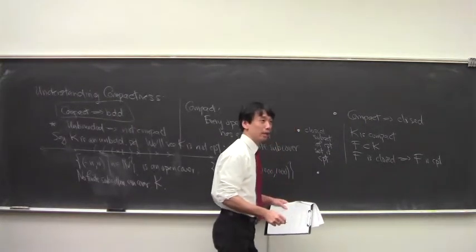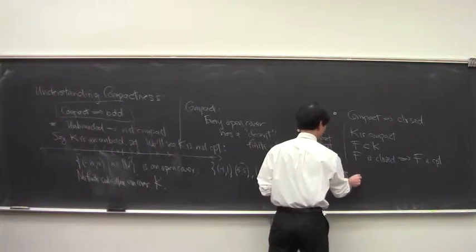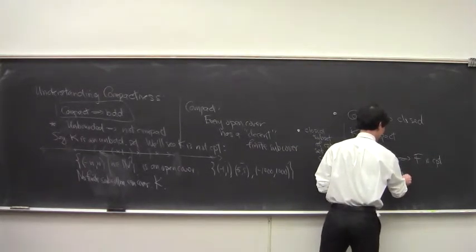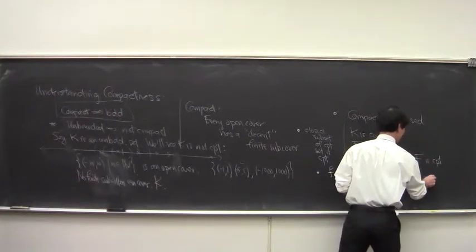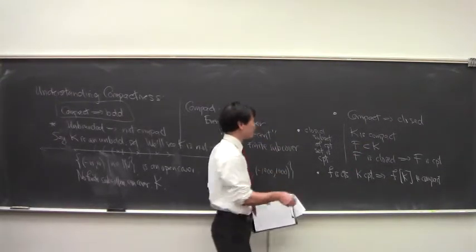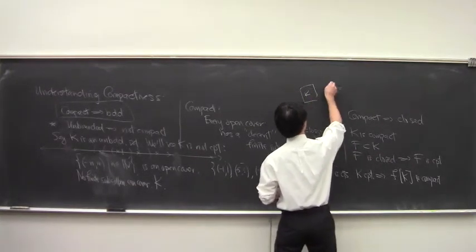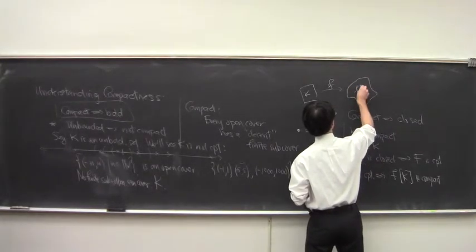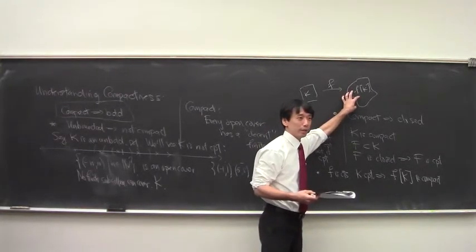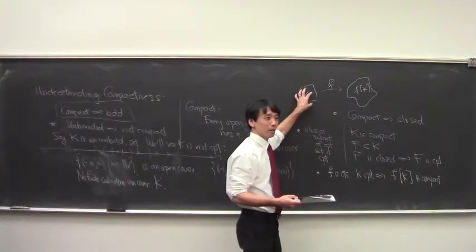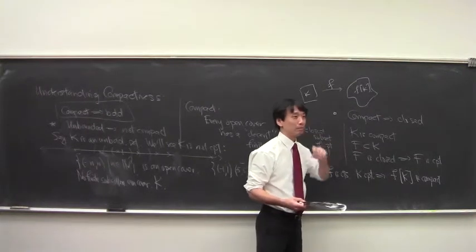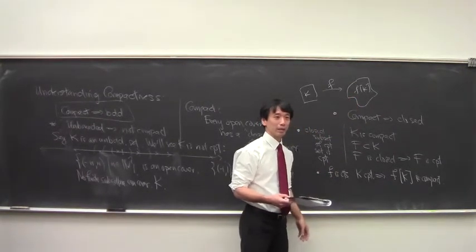The last thing we did was: if f is continuous and k is compact, then the image f(k) is also compact. You start with a compact set k, push it through f, and the image f(k) is compact. Whenever you have an open cover of f(k), you pull it back to k; since k is compact you get a finite subcover, and those corresponding sets cover f(k).